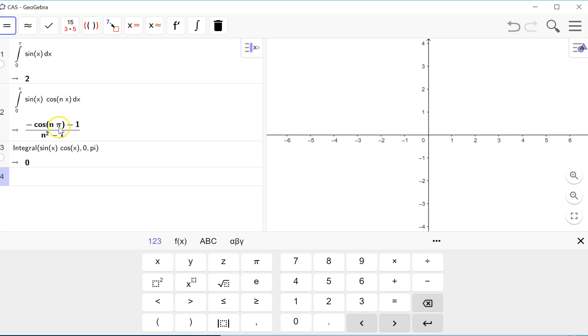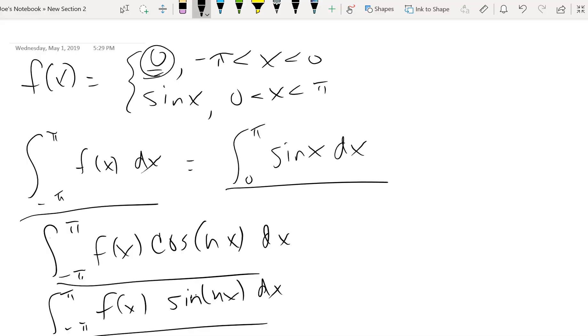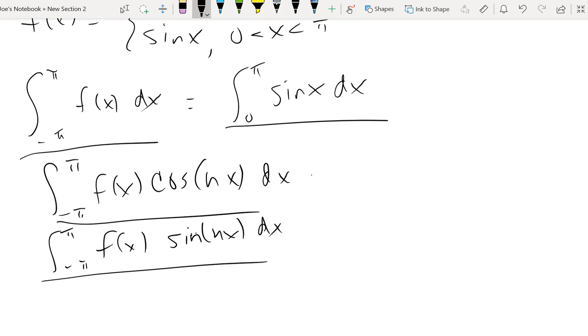When n is 2, we get negative 2 over n squared minus 1. When n is 3, we get 0 because we'll get a positive 1 minus 1. When n is 4, we'll get negative 2 again. So notice that whenever n is odd, we get 0. Whenever n is even, we get negative 2. So this is going to be negative 2 over a 2n squared minus 1. So I'm going to go ahead and write that down so I don't forget what that is. So for this particular integral, we get negative 2 over the quantity 2n squared minus 1 for n greater than or equal to 1.